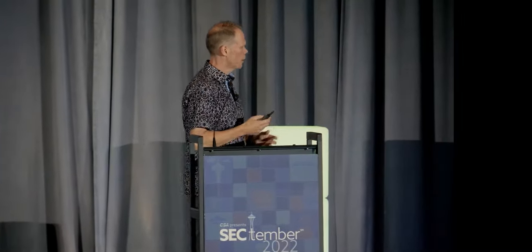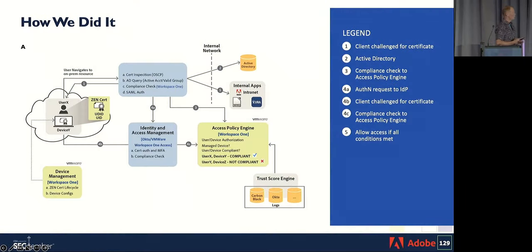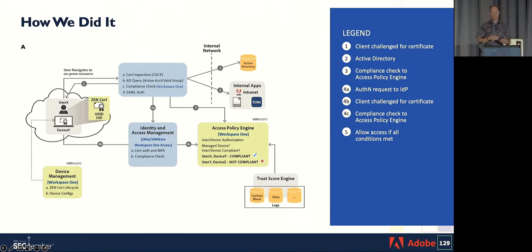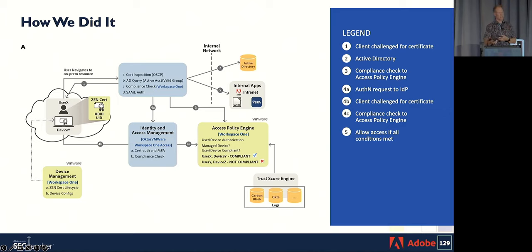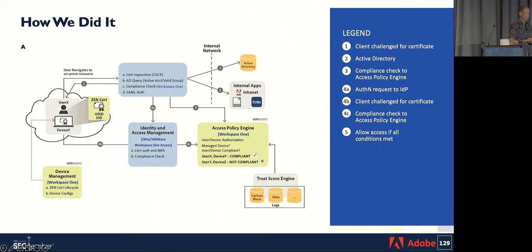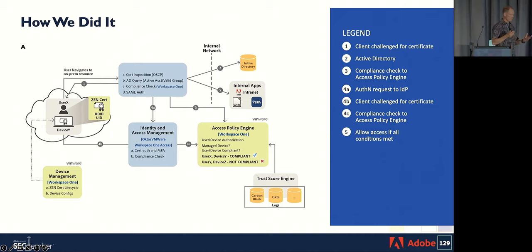On the technical side, we deployed certificates to all managed devices. Those certificates are used as part of the authentication process. When a user hits a service, there's a redirect through Okta and our VMware VIDM solution that looks for the certificate. If present, it validates the certificate and checks the device. There's a real-time check to our Workspace ONE API endpoint, checking the status of the device and certificate, ensuring it has checked in recently and meets other criteria. Additional information from our EDR also feeds into the trust scoring.